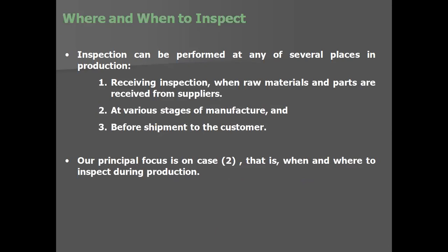Where and when to inspect: inspection can be performed at any of several places in production. First is receiving inspection — when receiving raw materials or components from a supplier, those are inspected immediately upon receipt. Second is at various stages of manufacturing, to ensure parts are good and can proceed to the next station or be reworked or scrapped. Third is before shipment — the final inspection before reaching the customer.